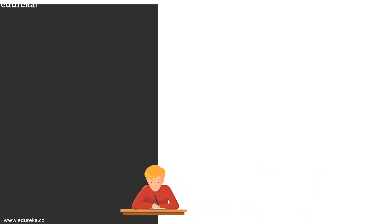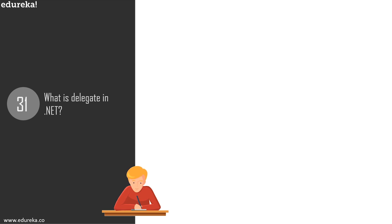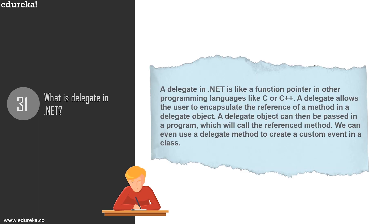Question 31: what is a delegate in .NET? A delegate in .NET is similar to a function pointer in languages like C or C++. It allows users to encapsulate the reference of a method in a delegate object. The delegate object can be passed to a program that will call the referenced method. You can use the delegate method to create custom events in a class.